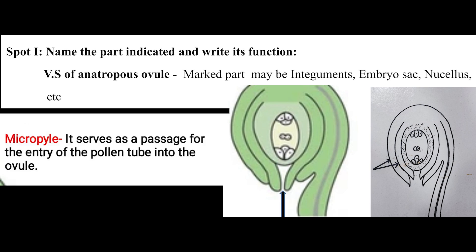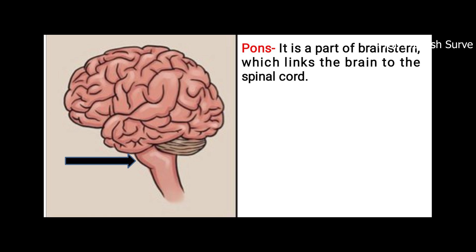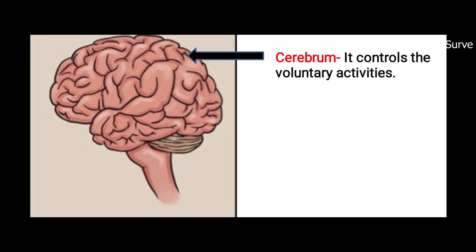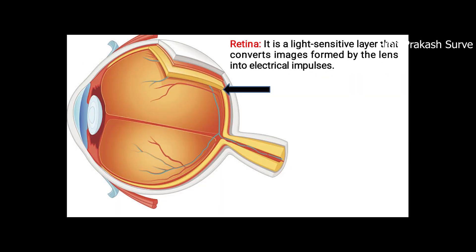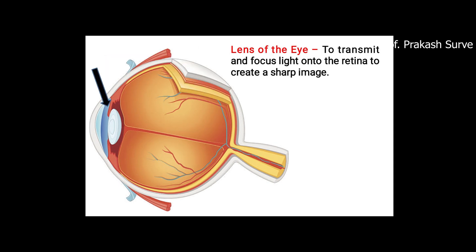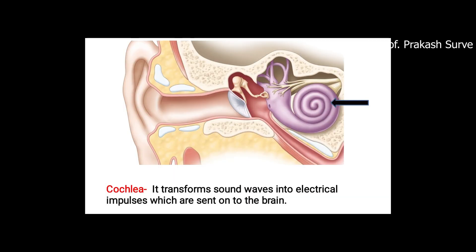Next is spot I, where you have to identify and write the function of the same. So maybe an ovum or maybe a brain. The pointed part you have to identify and write the function. Next is about the human eye — here also the same, the pointed part is there which you have to identify and write the function. Similarly, any one particular part you have to identify and write the function.